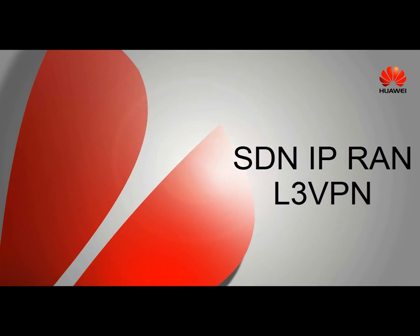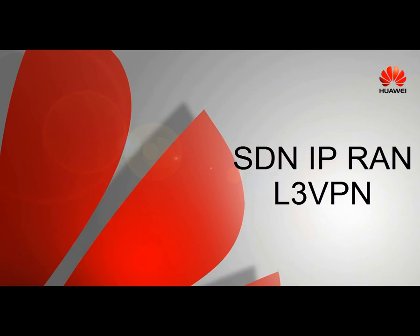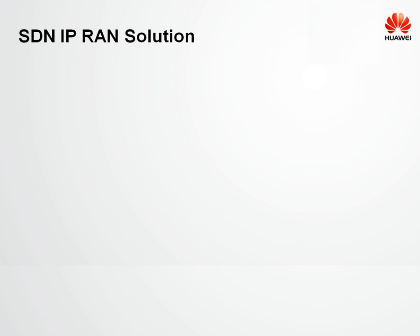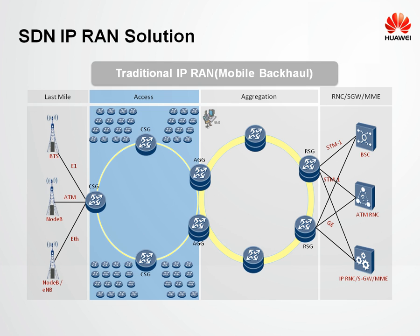Hello, today we are going to talk about SDN-based IP-RAN solution using L3 VPN as a service. On a traditional IP-RAN network, a large number of access devices are deployed at the access layer. In the current network build-out and operating modes, decentralized access routing devices need to be managed node-by-node, which is very time-consuming and requires manual intervention, causing it to drastically increase the operation and maintenance cost.